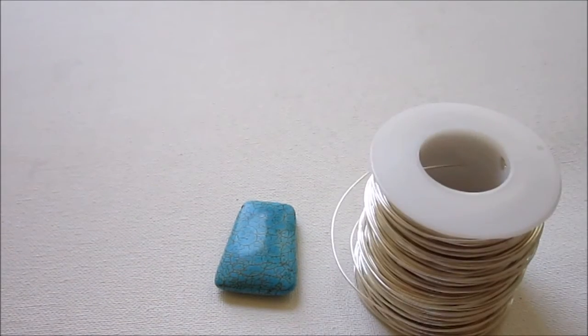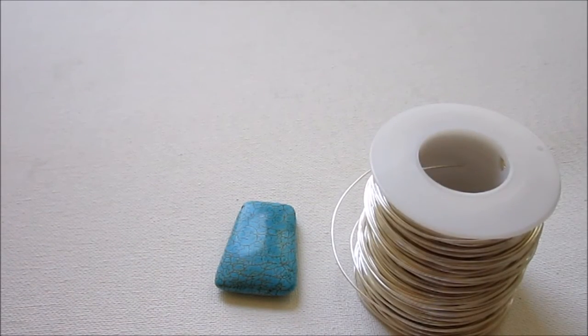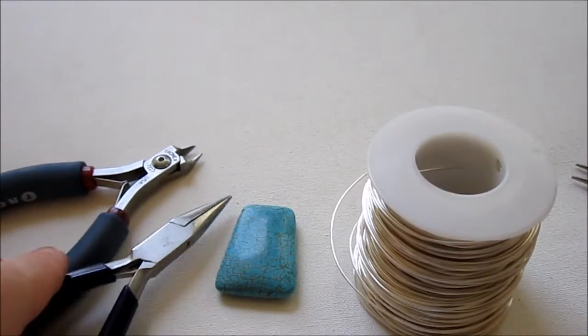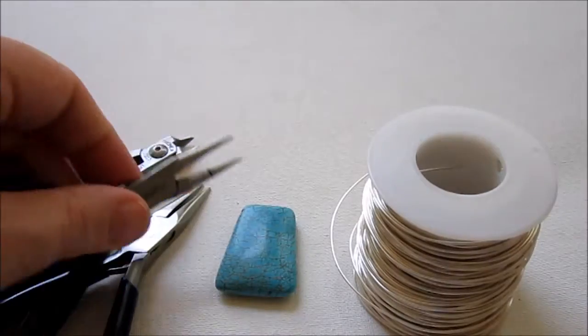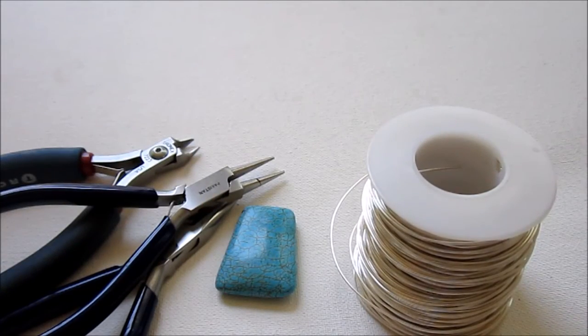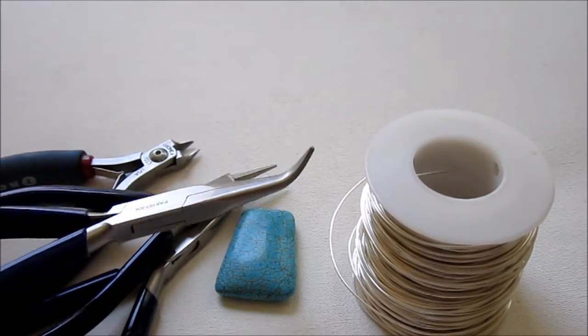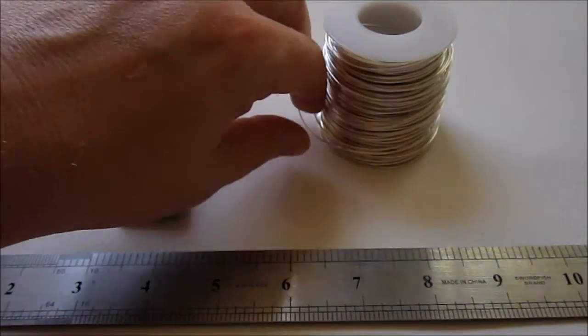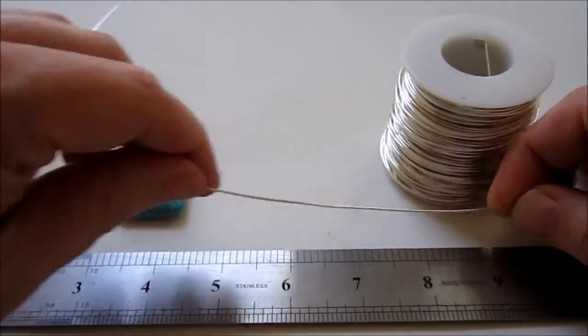You'll need 20 gauge half-hard round wire, wire cutters, chain nose pliers, and round nose pliers. And it's always helpful to have a pair of bent nose pliers around just in case you need them to help with your wrapping. We're going to start by cutting about 10 inches of wire.